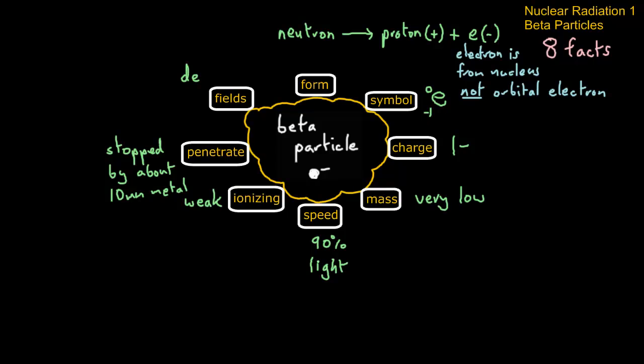When we look at the effect of fields on the electrons—negatively charged—so it's going to be deflected by magnetic and electric fields.